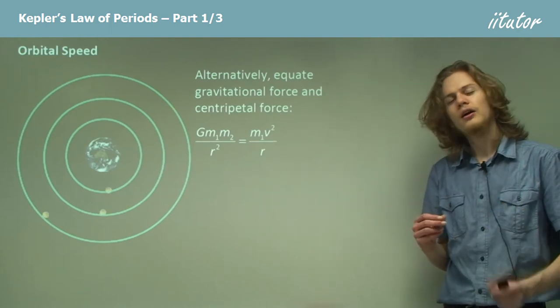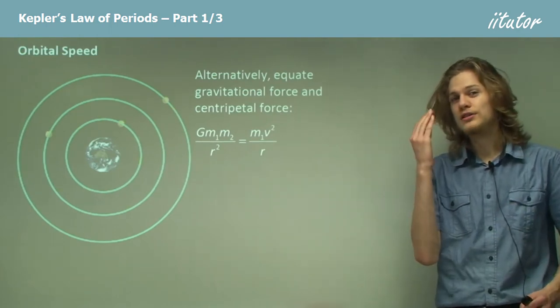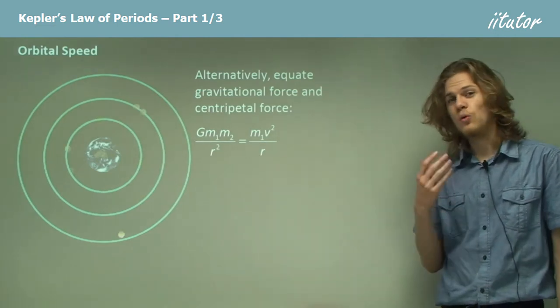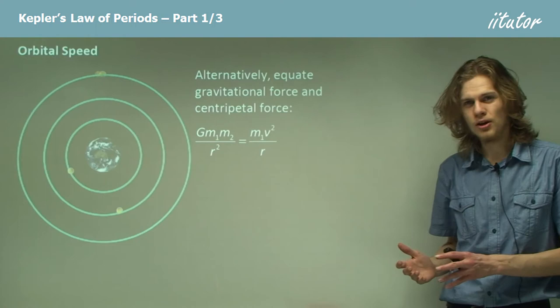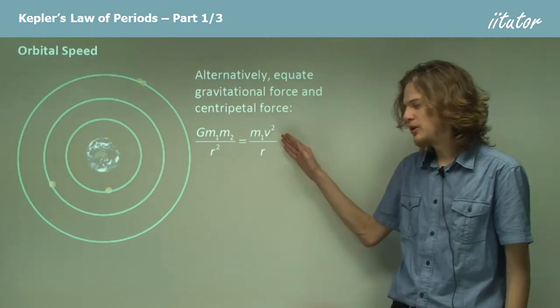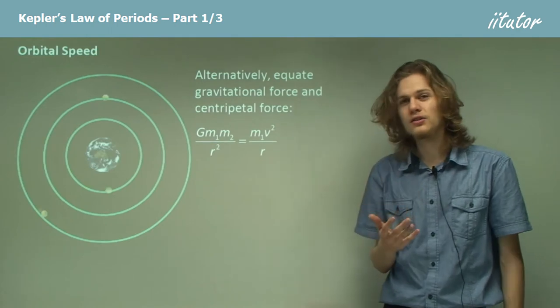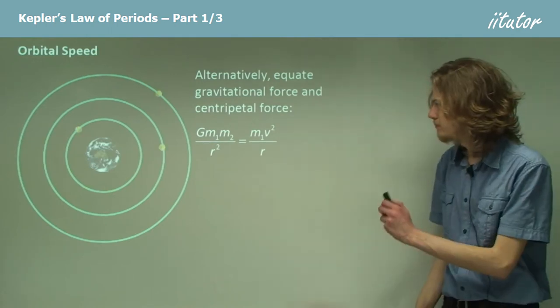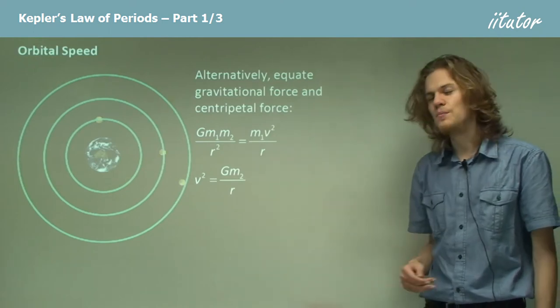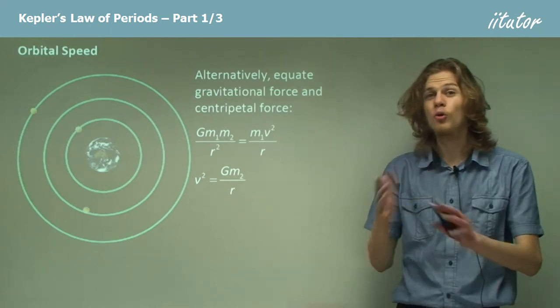Alternatively, we can use the equation for centripetal force, which is mv² over r. And we can equate that with gravitational acceleration. This means that we can obtain an expression for v just by rearranging the equation. v² equals Gm over r, where m is the mass of the central body and not the orbiting one.